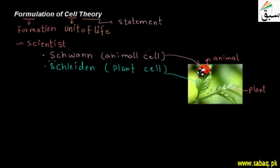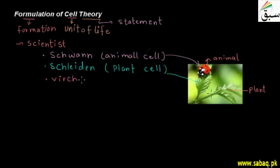Another scientist came to this theory. It was established that plants and animals are made by cells. But there was a need for modification — he extended the cell theory to include how cells divide and arise from existing cells.